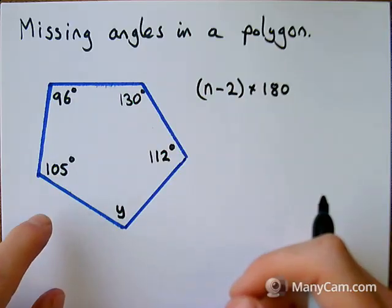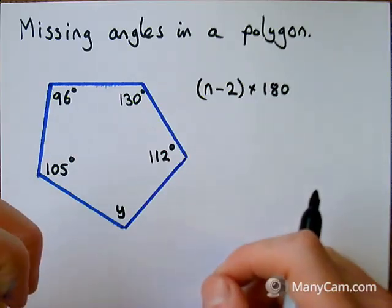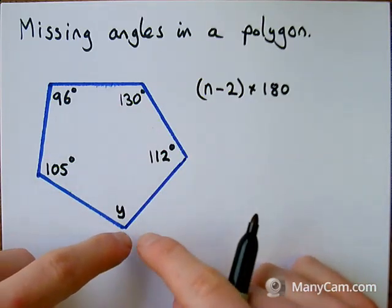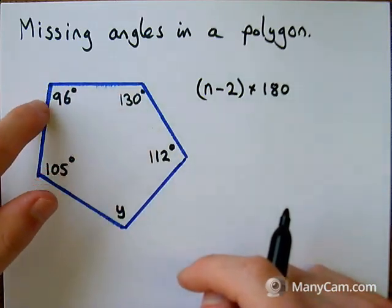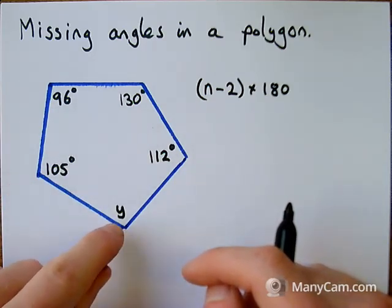For this example that I've got here, I've got a pentagon, a five-sided shape. So to begin with, my very first step is to look at how many angles there's going to be in total in this whole shape. Then I can work out what that missing angle is going to be.